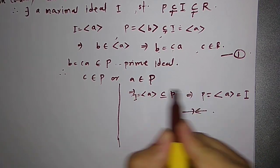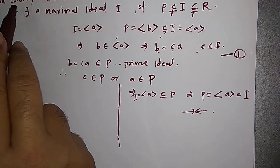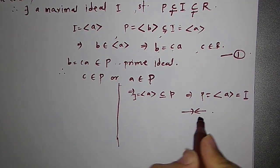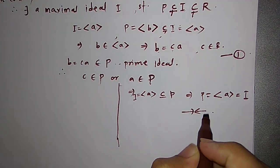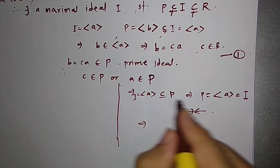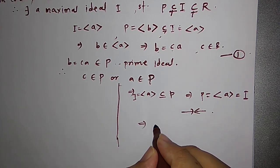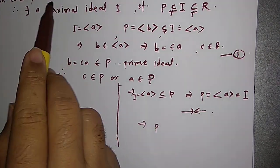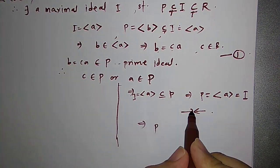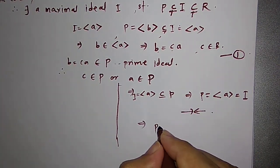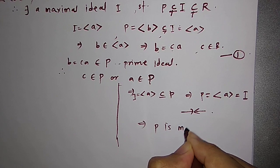Since we started with proof by contradiction, we got a contradiction here. That means P has to be maximal, because we assumed P is not maximal and derived a contradiction, which implies P is maximal.